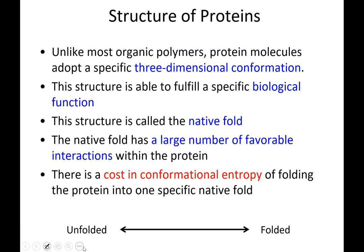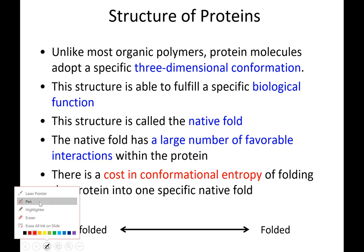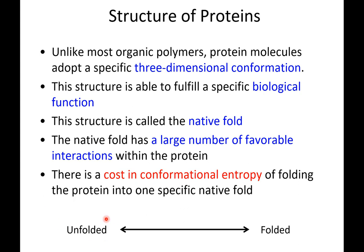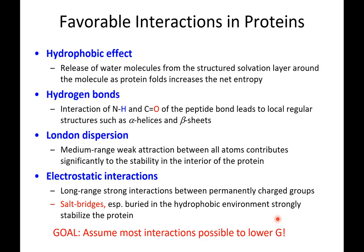What makes the protein want to be unfolded is truly just entropy. In the unfolded state, the protein can move around as much as it wants to — there's a lot of disorder. In order to drive the protein into the folded state, there have to be enough forces to overcome that natural drive for entropy, that natural drive for disorder. These are the most important interactions that can overcome that entropy, allowing proteins to fold.